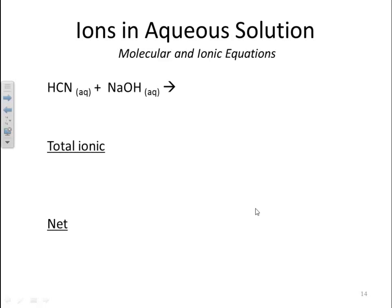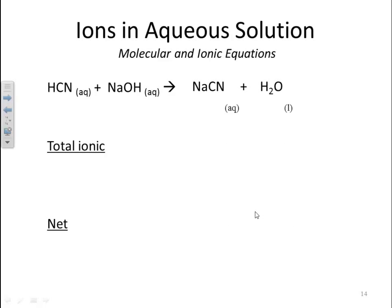Let's look at another example: HCN and sodium hydroxide. We take the cation and anions and switch them, which gives us NaCN and water. The substances are balanced — CN is −1 and sodium is +1, so no change there. Everything has a coefficient of 1, not a problem. Sodium cyanide is a soluble salt, so we put aqueous for that. Water is our liquid.